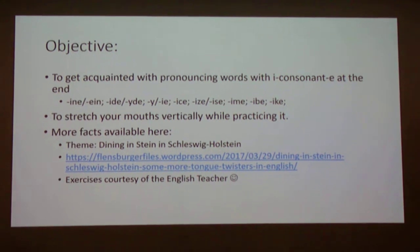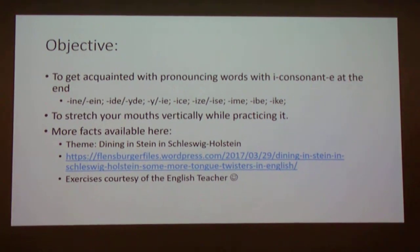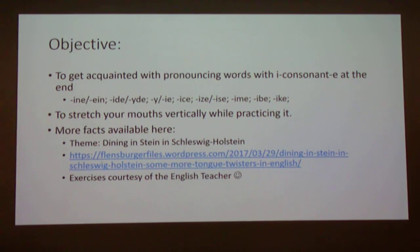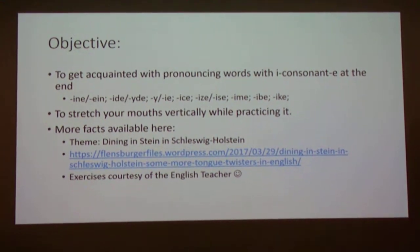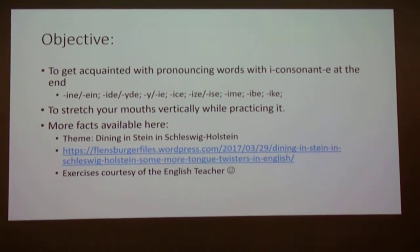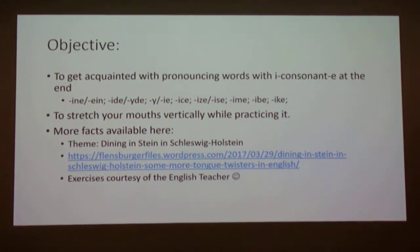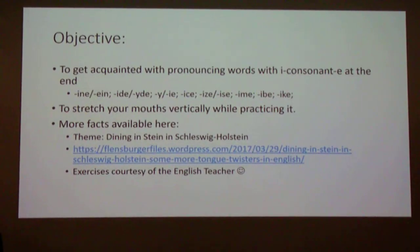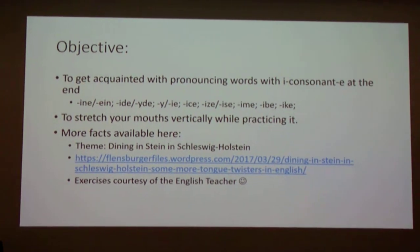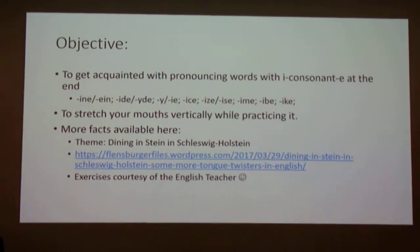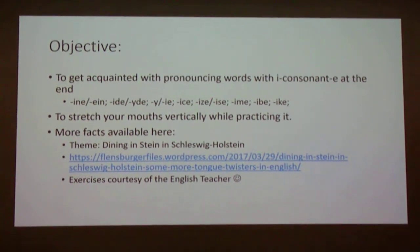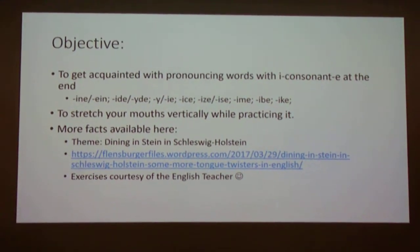Icon-E consists of an I, a consonant, and E at the end of each word. Whenever you have such consonants like I-N-E, I-D-E, Y-D-E, I-C-E, I-Z-E, I-S-E, I-M-E, I-B-E, or I-K-E, as well as Y and I-E at the end, each word has a vowel pronunciation at the end, like A.